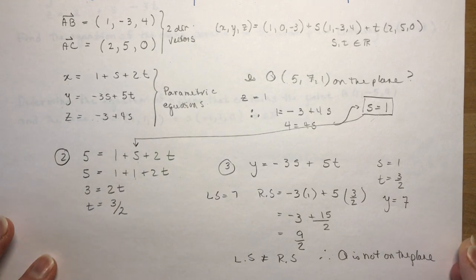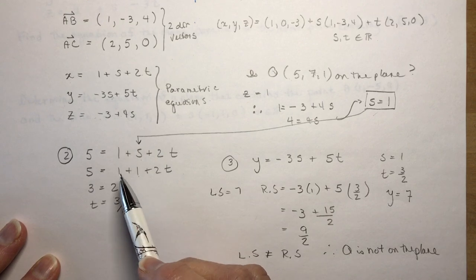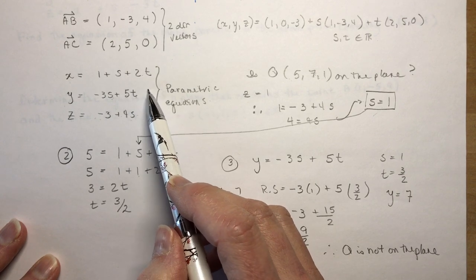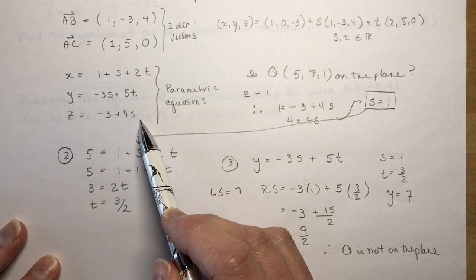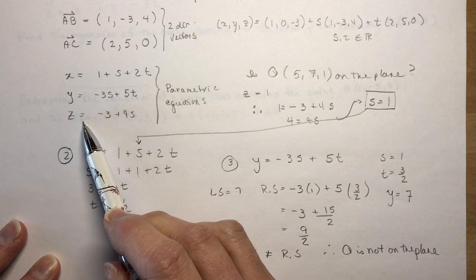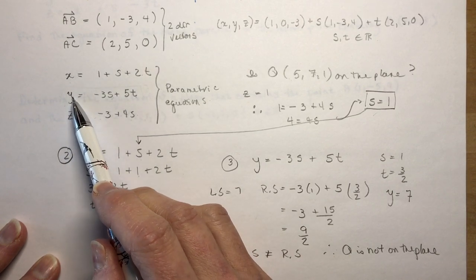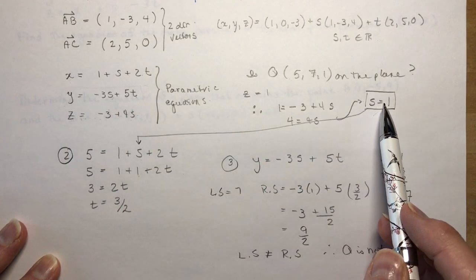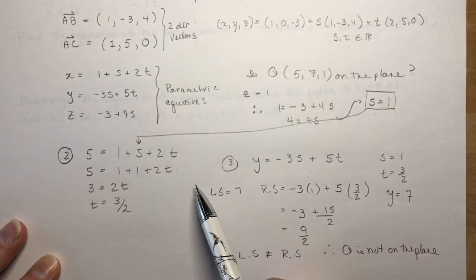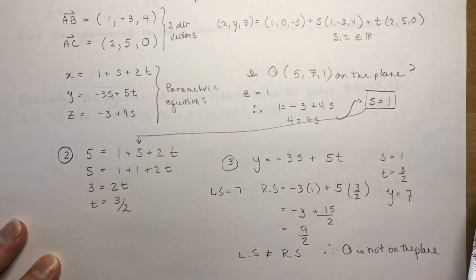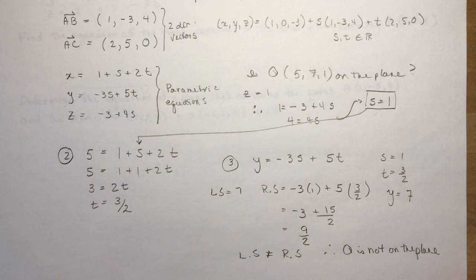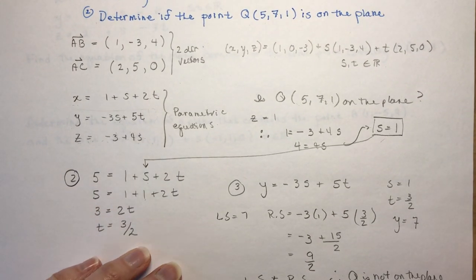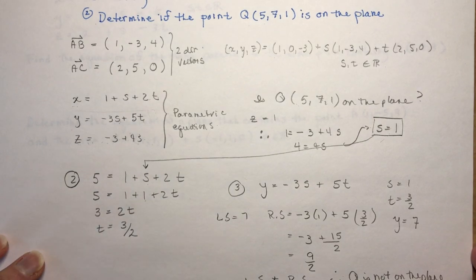You could pick any two equations to start - for instance, using Y and Z to solve two equations with two unknowns for S and T, then plugging those into X to verify. It's your choice. It makes it easier for marking if everyone does the same thing, but everyone tends to choose different ways of solving it.